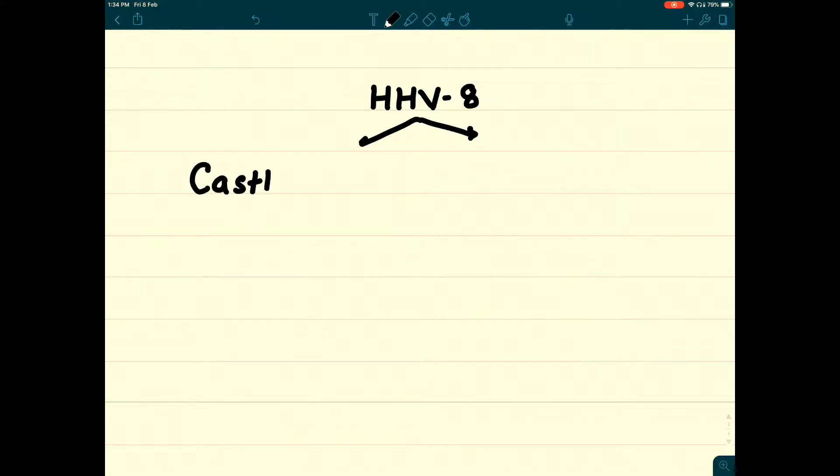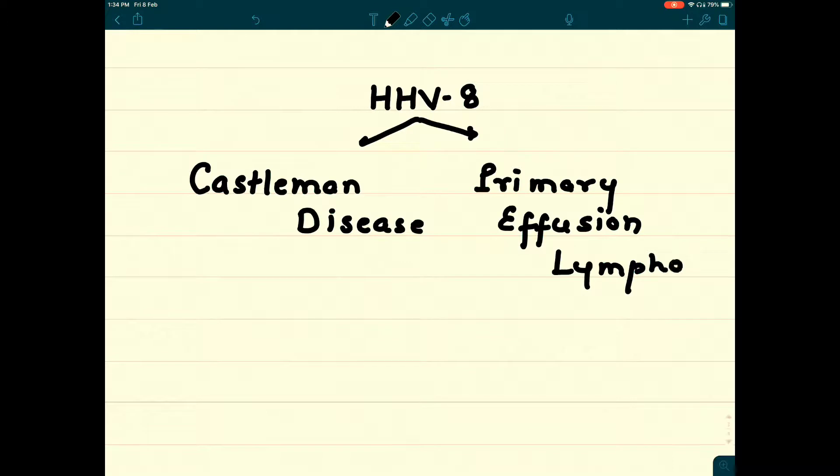First disease is Castleman disease because it was first described by Benjamin Castleman. And second one is primary effusion lymphoma. Seen in HIV patients, there is effusion of body cavities and that's why we call it primary effusion lymphoma.